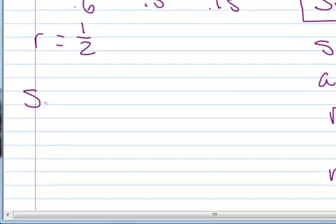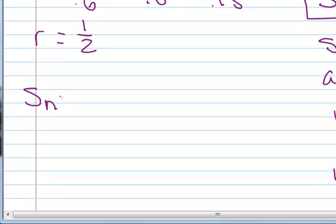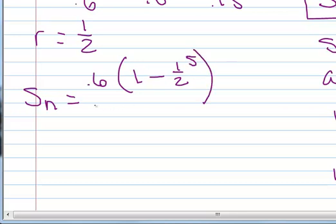So let's calculate our sum, and I'm well aware you could just add them up on your calculator, but it's not always going to be just 5 terms. So a sub 1, here we go, is 0.6 times 1 minus r, r is 1 half, there we go. And that's to the n power, notice that goes on the inside of the parentheses, all over 1 minus 1 half.